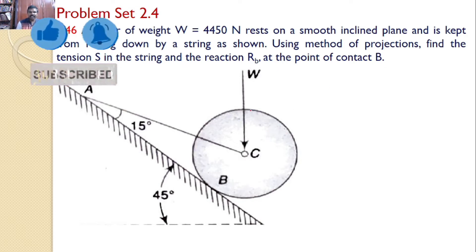That means there is a roller kept on an inclined plane, but it is prevented from rolling by a string like this. AC is a string.